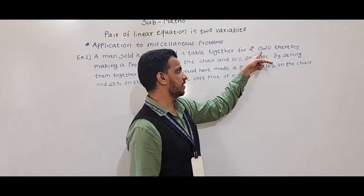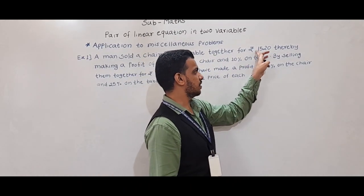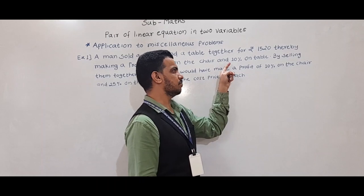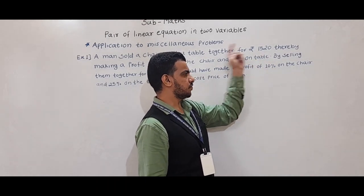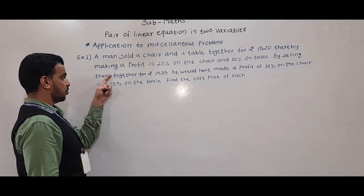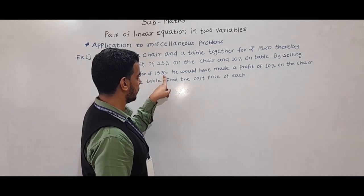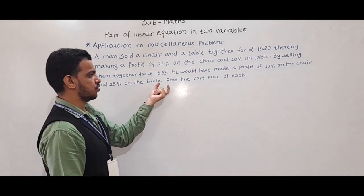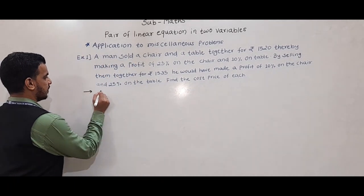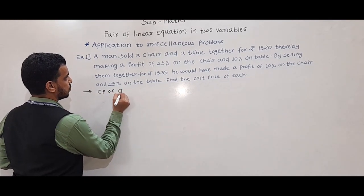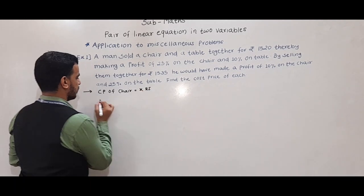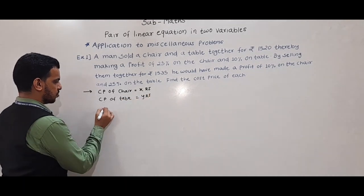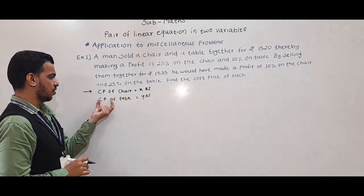The total selling price of chair and table is Rs. 1520, thereby making a profit of 25% on the chair and 10% on the table. By selling them together for Rs. 1535, he would have made a profit of 10% on the chair and 25% on the table. We need to find the cost price of each. I am supposing the cost price of chair is Rs. X and cost price of table is Rs. Y.